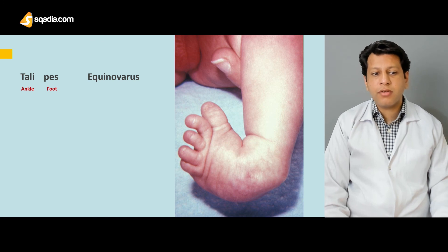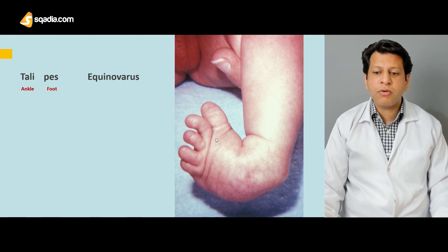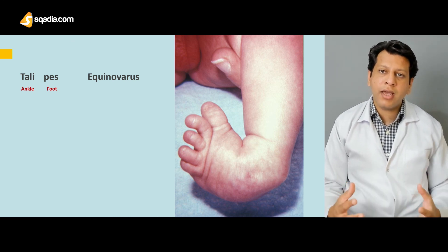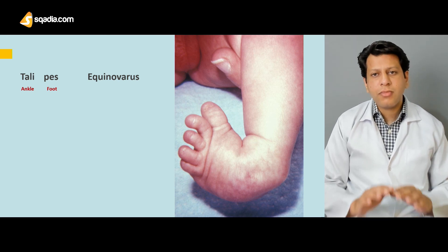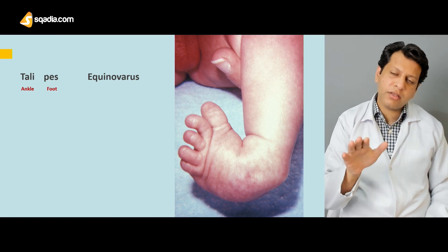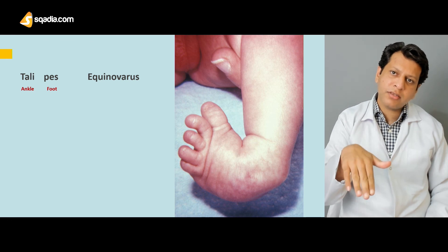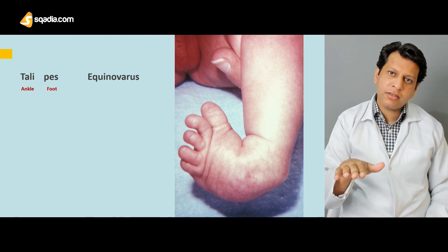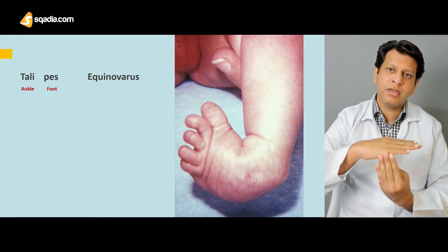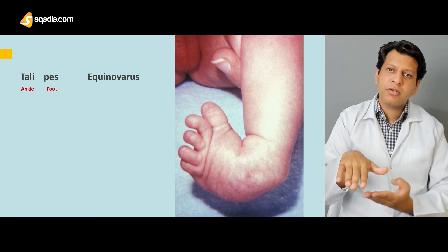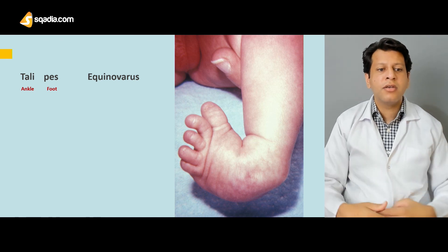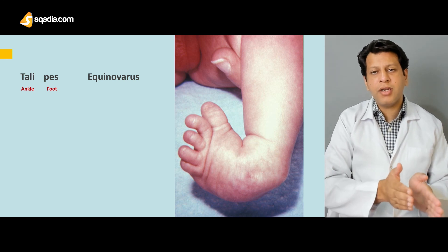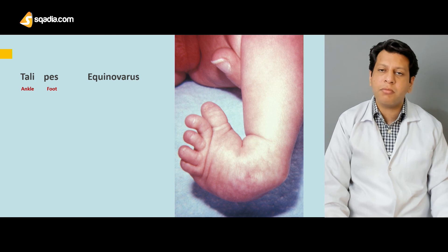The term 'talipes' comes from Latin: 'talus' means ankle and 'pes' means foot. It is not an isolated problem of just the foot — the forefoot, midfoot, and hindfoot are all involved. The hindfoot articulates with the talus, which forms the ankle joint, and in turn articulates with the tibia, so the problem is at both the ankle and the foot. 'Equino' refers to increased plantar flexion of the foot — the foot is going more downward or plantar-flexed — while 'varus' means medially rotated, so the foot is pointing downward and inward, forming the classic club foot.